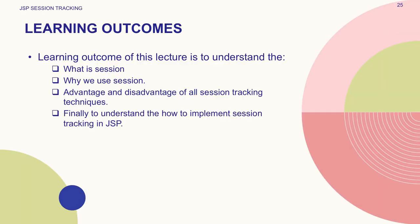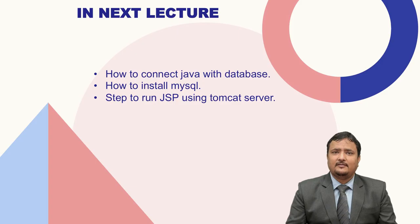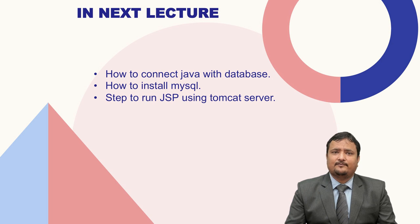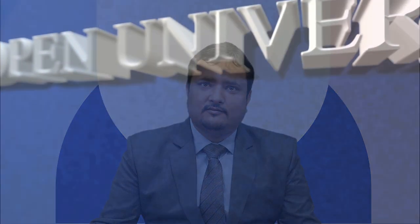The learning outcomes of this lecture are: to understand what session is and why we use session, to know the advantages and disadvantages of all session tracking techniques, and finally to understand how to implement session tracking in JSP. In the next lecture, you will learn about Java Server Pages with JDBC — how to connect Java pages with a database, how to install MySQL, and the steps to run JSP using the Tomcat server. Thank you. Bye.